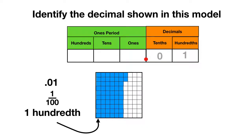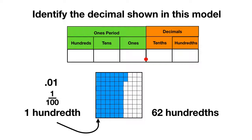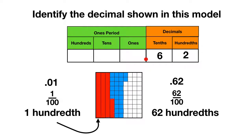Now let's get to our model. How many pieces do we have shaded? You can count ten, twenty, thirty, forty, fifty, sixty, sixty-one, sixty-two. So using words, you can say we have sixty-two hundredths. How do you write sixty-two hundredths as a fraction? You write that we have sixty-two pieces out of one hundred. How do you write sixty-two hundredths as a decimal? You write it as .62 with six tenths and two hundredths, because shading sixty-two hundredths is the same as shading one, two, three, four, five, six tenths. So we can write it as six tenths and then those two extra hundredths.